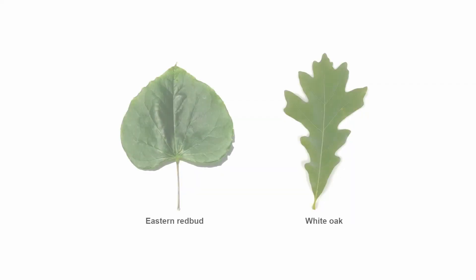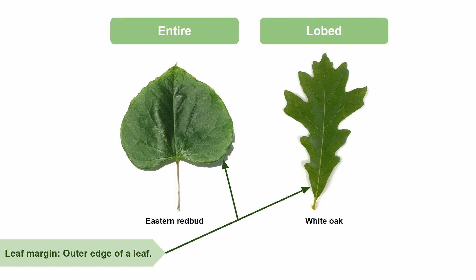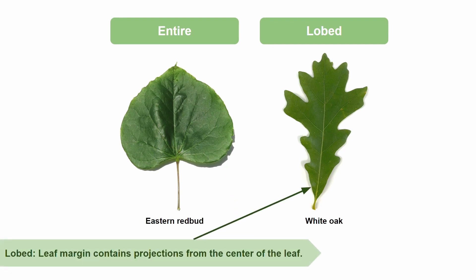Okay, enough with the stem, let's move back to the leaves themselves. Let's start with leaf margins. A leaf margin is the outer edge of a leaf. There are two main categories, which are entire and lobed. Cercis canadensis, otherwise known as eastern redbud, is entire, which means that its leaf margin has no lobes, whereas Quercus alba, otherwise known as white oak, is lobed, which means that its leaf margin contains projections that extend from the center of the leaf.